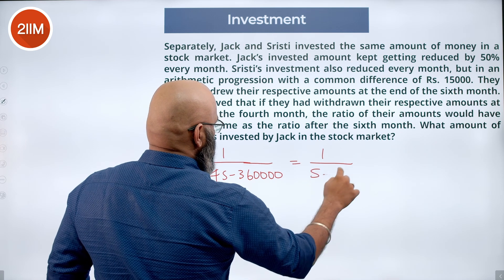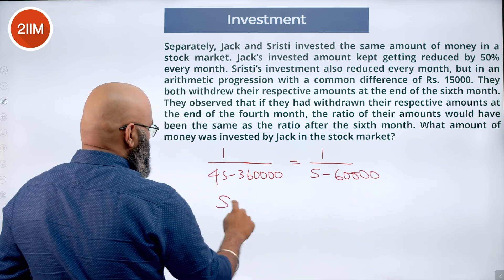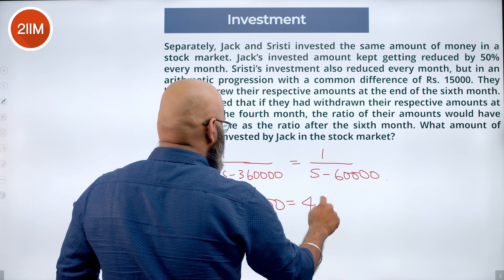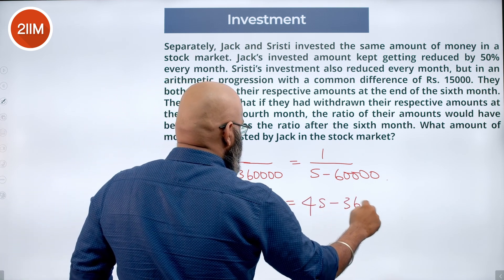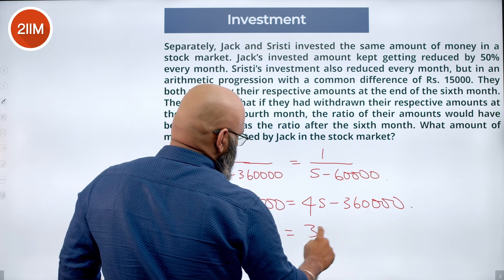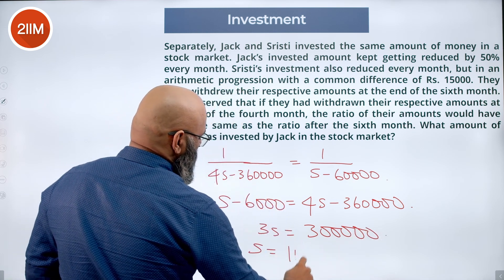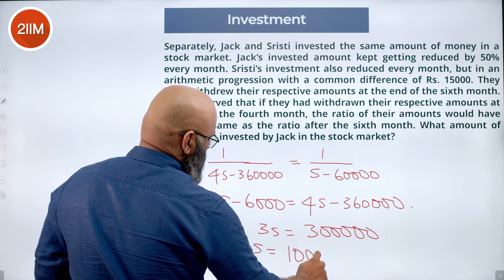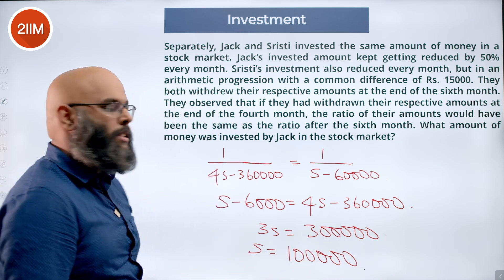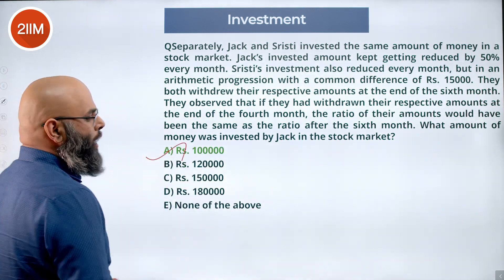Expanding: S − 60,000 = 4S − 3,60,000. Rearranging: 3S = 3,00,000, so S = 1,00,000. Srishti invested one lakh, and since Jack invested the same amount, Jack also invested one lakh. The answer is option A.